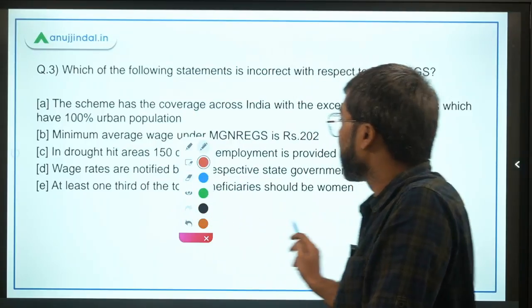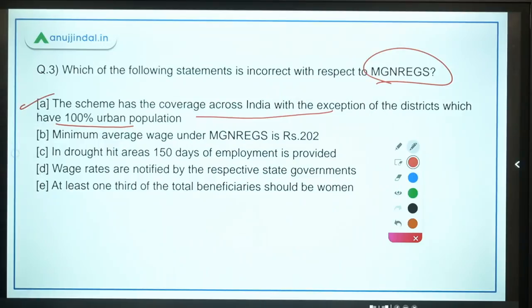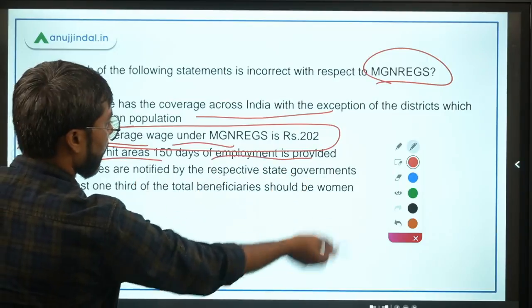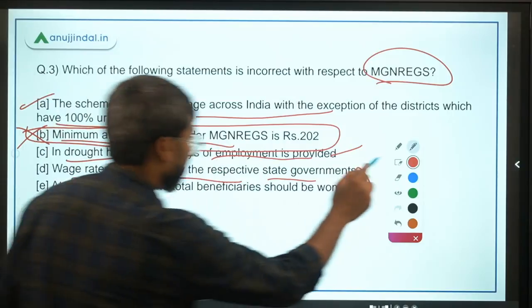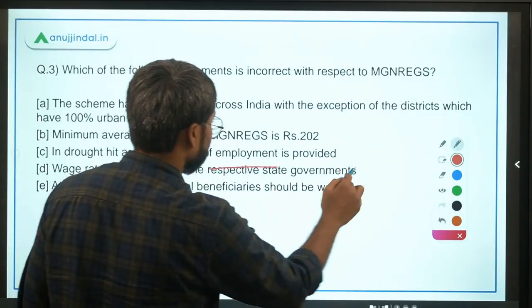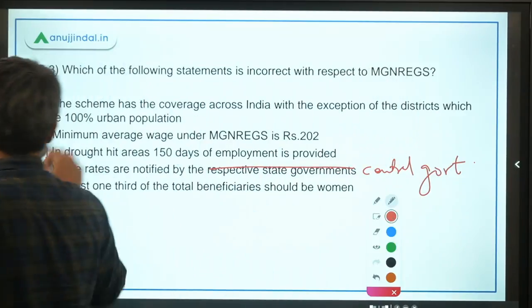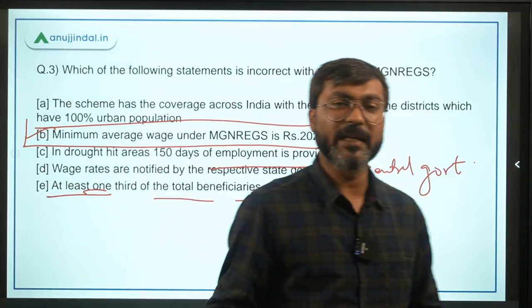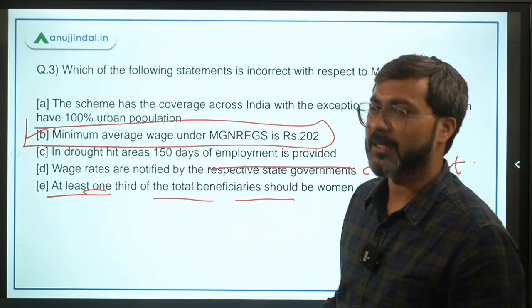Question 3: Identify the incorrect statement about MGNREGA from the following. Statement A: The scheme covers pan-India except districts with 100% urban population — correct. Statement B: Minimum average wage under MGNREGA is Rs. 202 — this was last year's figure, so this is incorrect for the current year. Statement C: In drought-hit areas, 150 days of employment is provided — correct. Statement D: Wage rates are notified by the central government — correct. Therefore, option B is the incorrect statement. Note: minimum average wage changes yearly and is not critical to memorize for the exam.